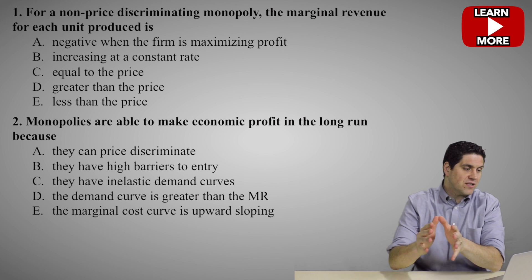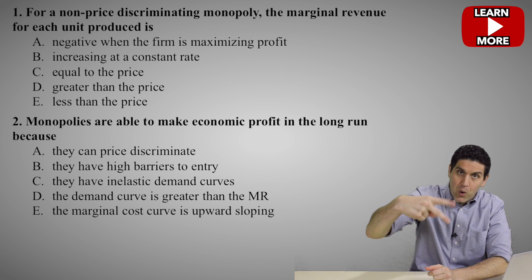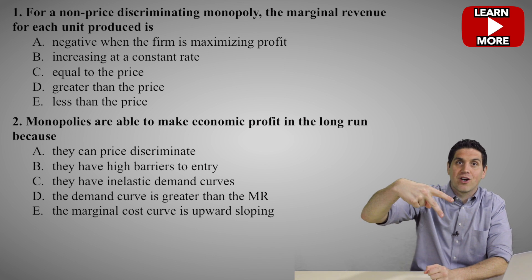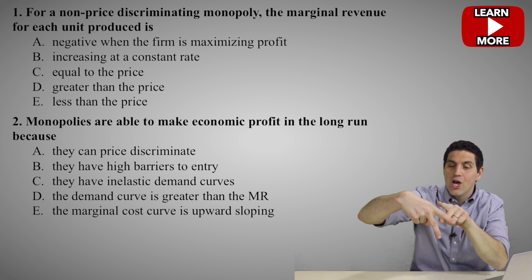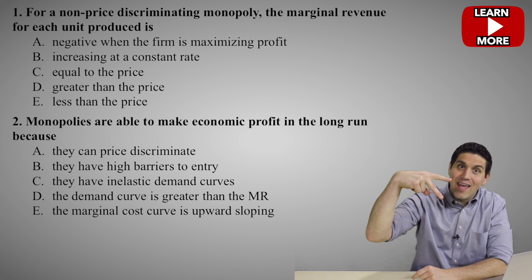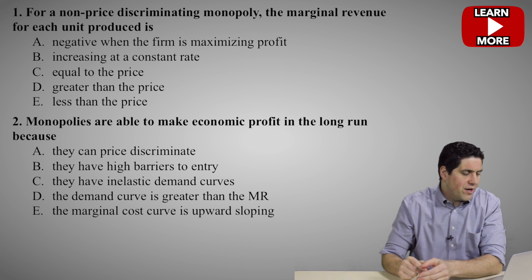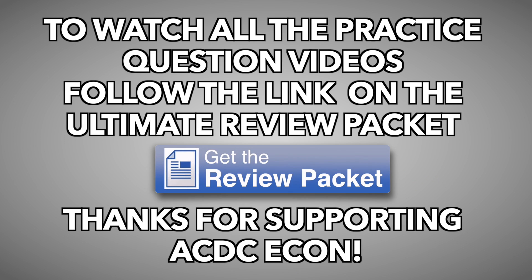For question number one, for price-setting monopolies, the marginal revenue is less than the demand curve, right? Looks like this — got demand, marginal revenue — bam, there it is. So the right answer here is—